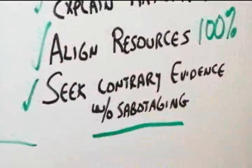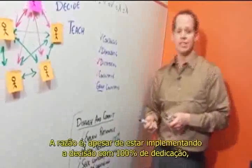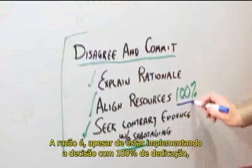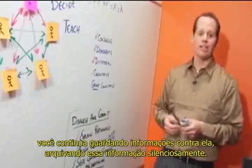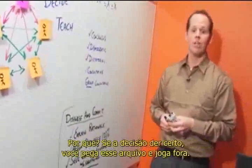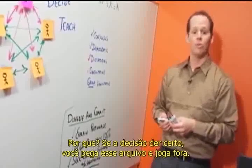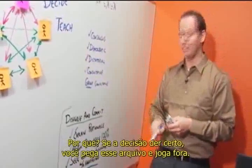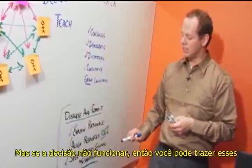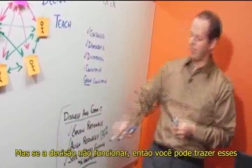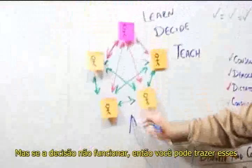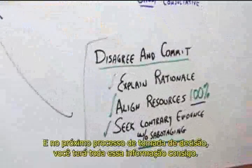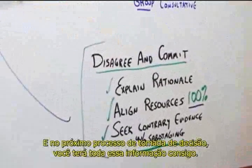Now that's an odd balance. Why would you want to do that? The reason is, although you're implementing the decision 100%, you're continuing to file away contrary evidence that might not support it, putting it in a file quietly. If the decision works out, you take that file and throw it away. But if the decision doesn't work out, then you can bring that contrary evidence back to the group, and in the next decision-making process, you'll have that much more information.